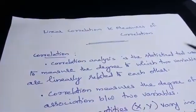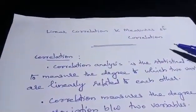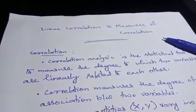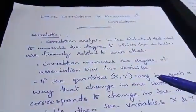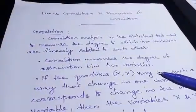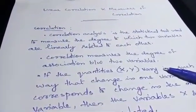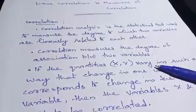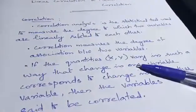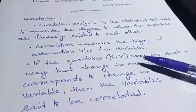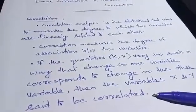Good morning dear students. Today we are going to learn linear correlation and measures of correlation. So first let's see what is correlation. Correlation is a relationship between two variables. This measures the degree of association between two variables. Suppose the two quantities are x and y. How they are linearly related? That is correlation.